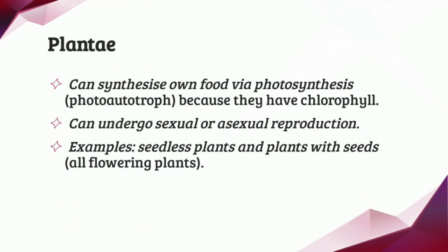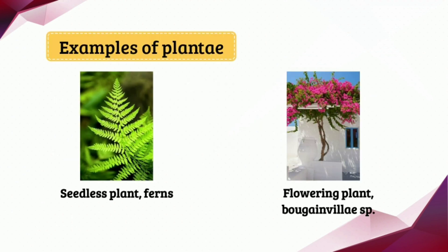Next, we have the Plantae kingdom. It can synthesize its own food via photosynthesis, making them photoautotrophs, because they have chlorophyll. The Plantae kingdom can also undergo asexual or sexual reproduction. Examples include seedless plants and plants with seeds, also known as flowering plants. For seedless plants, we have ferns, and for flowering plants, we have Bougainvillea species.